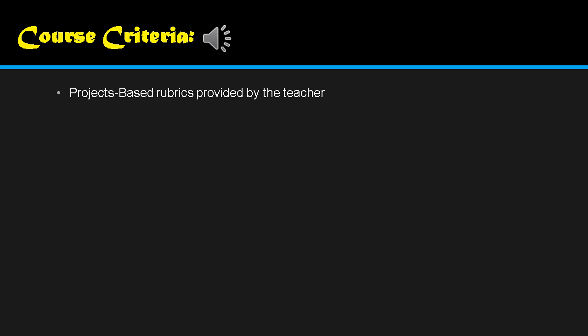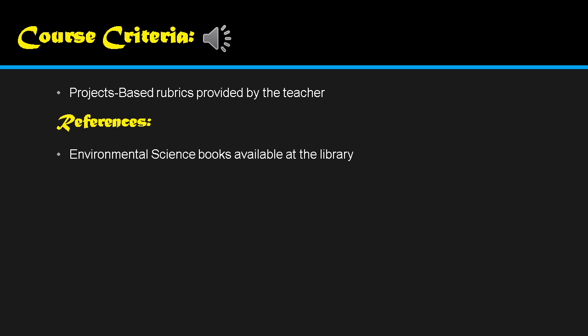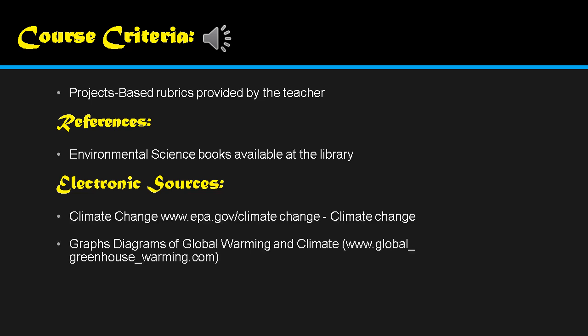We also have course criteria — I will be providing the project-based rubric and posting it in our Facebook group. For references, an Environmental Science book is available at the library, which you may use when visiting the campus. There are also many electronic sources and resources that you may browse online.